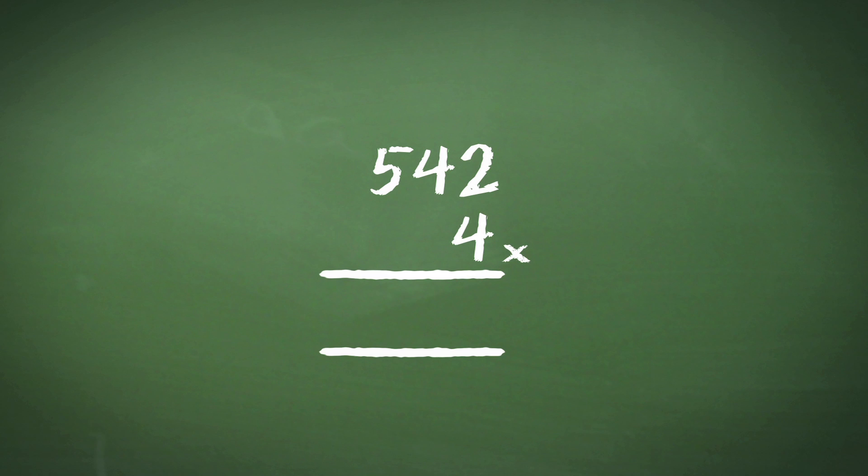So 2 times 4 equals 8. We then move on to 4 times 4 which gives us 16. Now rather than just putting the whole 16 in, we just put in the 6 and carry the 1 across to the next column.